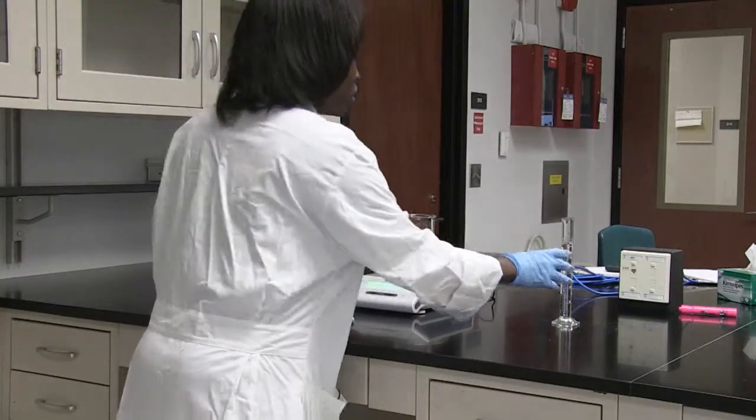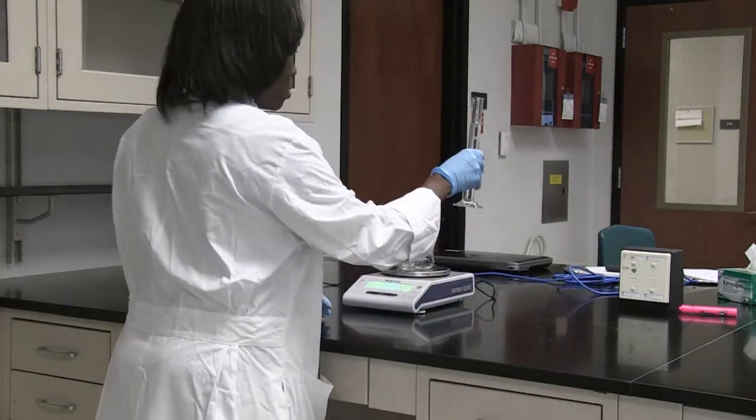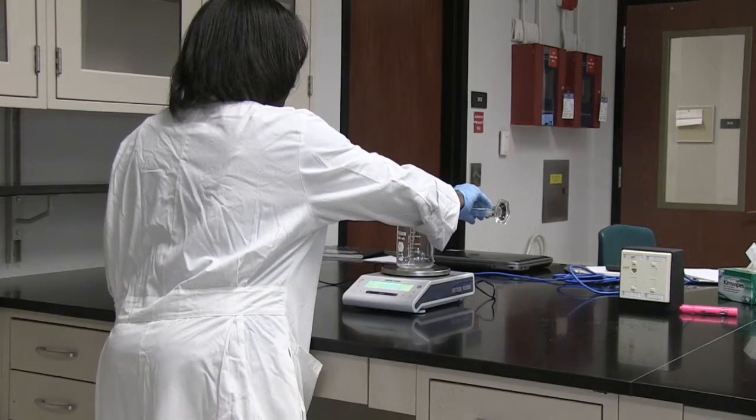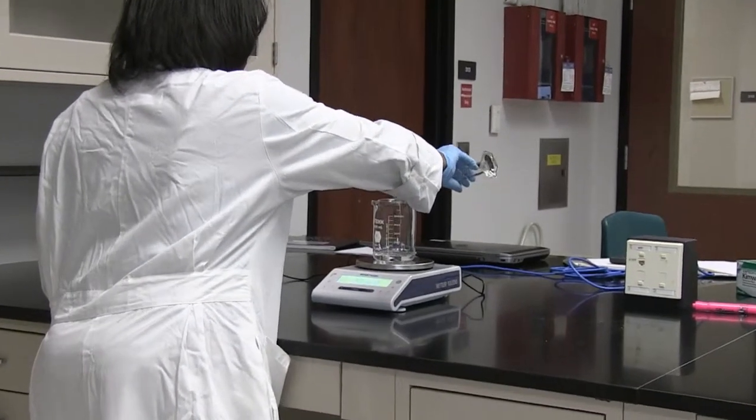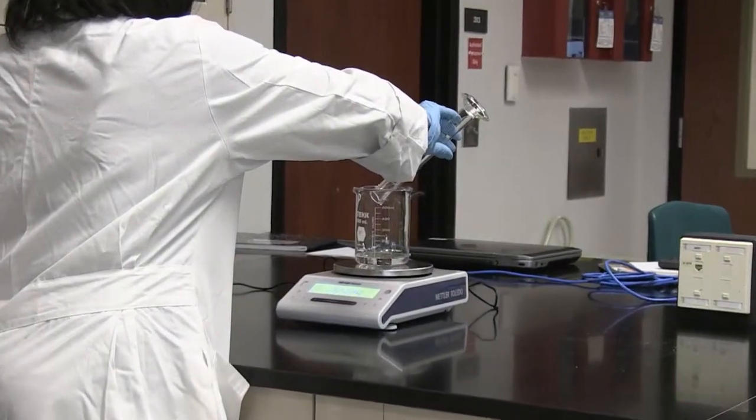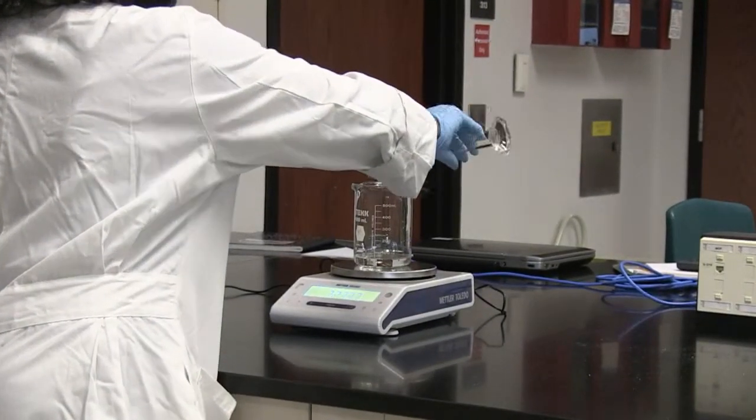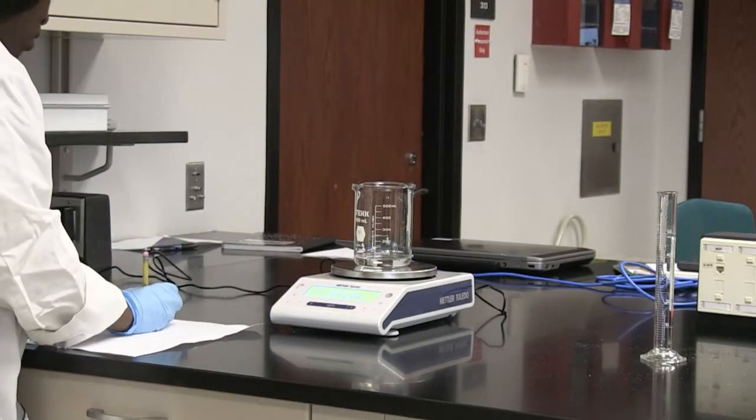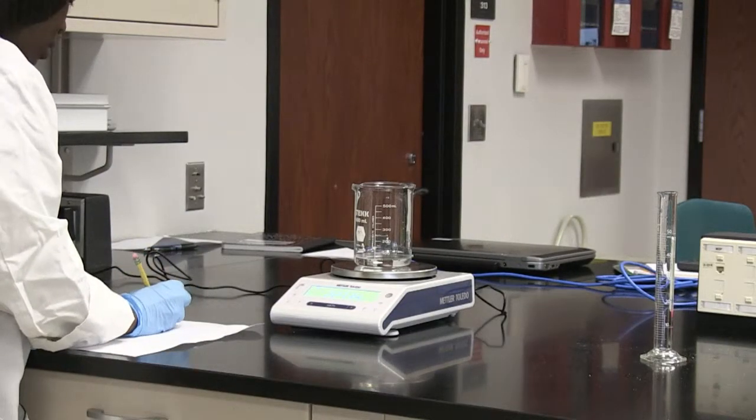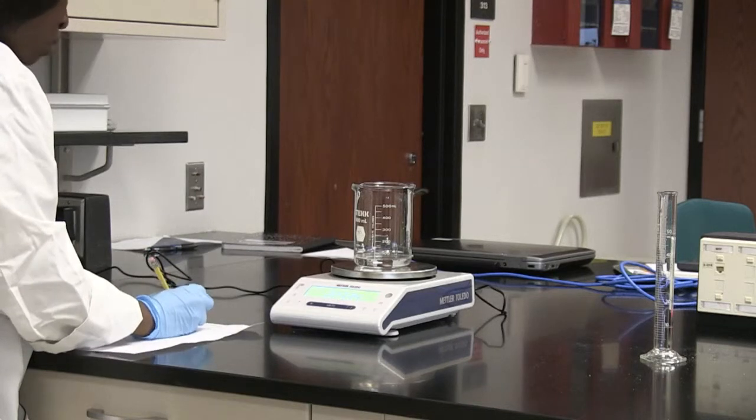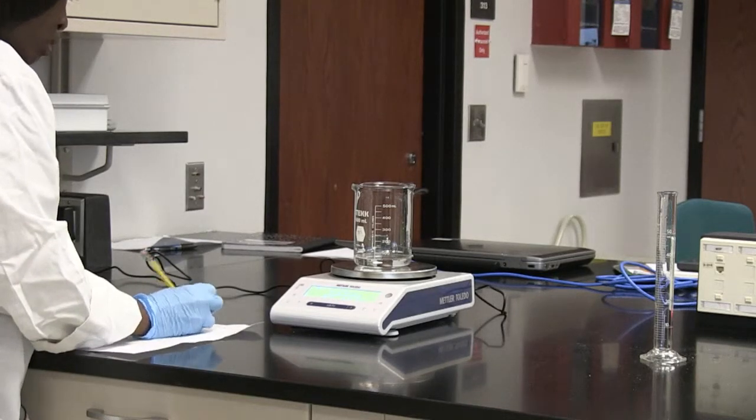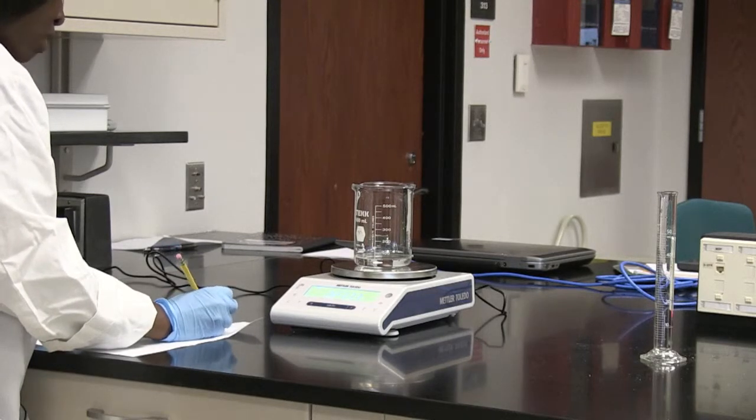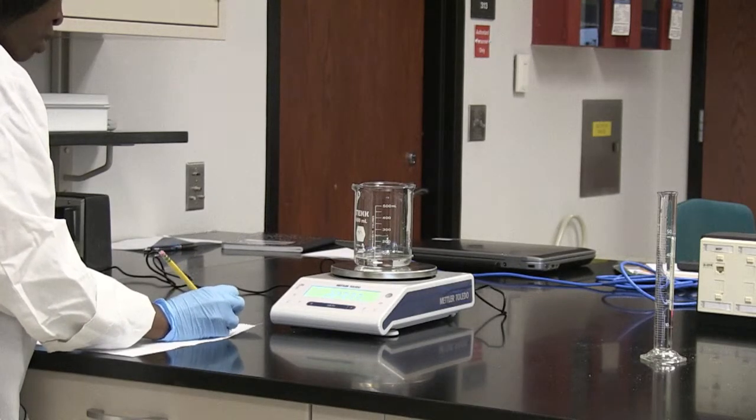Then I'm going to pour 50 milliliters of water into my beaker, and then I'm going to determine that weight. So the mass of the beaker plus water is 223.33 grams.